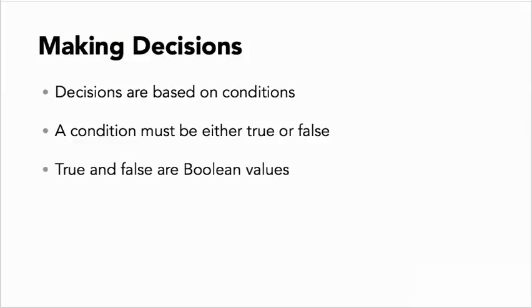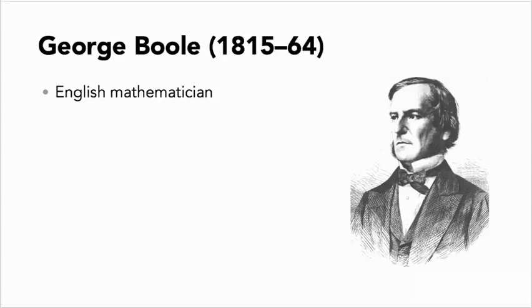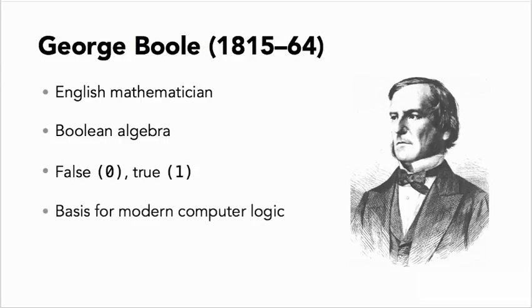In computing terminology, true and false are known as Booleans. They're named for George Boole, a 19th century English mathematician who developed what's known as Boolean algebra, which uses two values: 0 for false and 1 for true. This laid the foundations for the 1s and 0s that underpin modern computer logic.